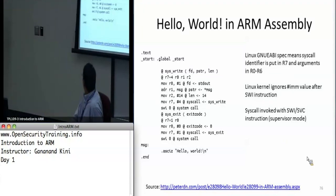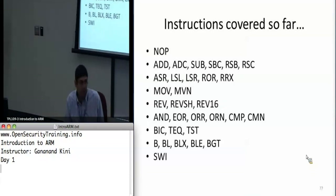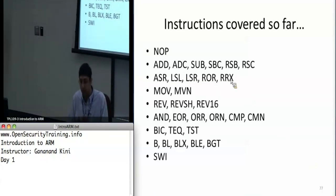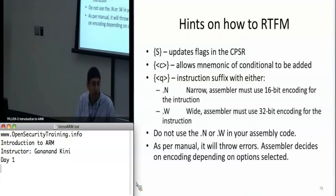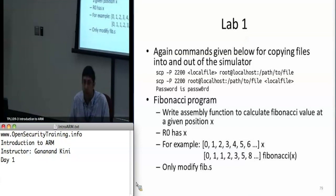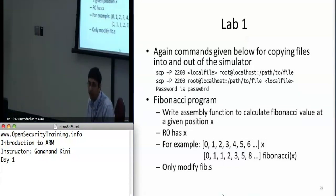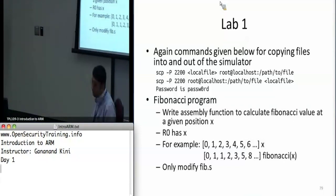The instructions covered so far include arithmetic operations, logical operations, memory and data operations, control flow and branches, and the SVC/SWI instruction for system calls — which changes mode and runs the software interrupt handler that the Linux kernel uses for its syscall conventions. Now we get to an exciting lab: the Fibonacci sequence number generator. You'll write it in assembly; filler code and the algorithm are provided to get you started.